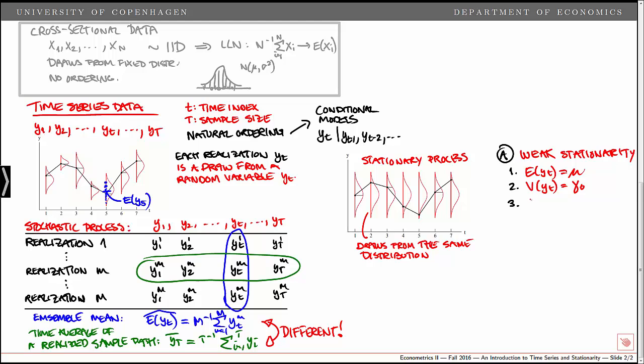Third, we need the covariance between Yt and Yt minus h is constant and equal to gamma h. And that is for h equals 1, 2, and so on. So that means that the covariance has to only depend on the distance between the two observations.